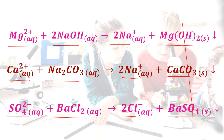Now we have only sodium plus ions and chloride ions remaining. This is not a problem because the brine solution is a concentrated sodium chloride solution, so it already contains sodium plus ions and chloride ions.